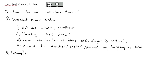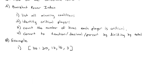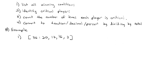We're going to look at a weighted voting system where 36 is needed for quota. Player 1 has 20 votes, Player 2 has 17 votes, Player 3 has 16 votes, and Player 4 has 3 votes. Our first goal is to list all of the winning coalitions.